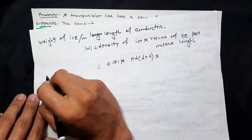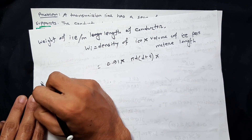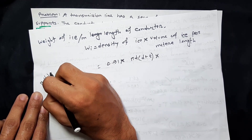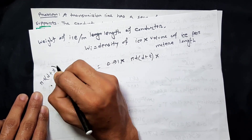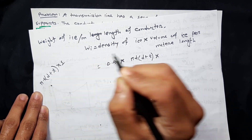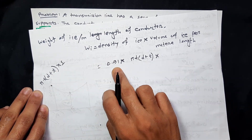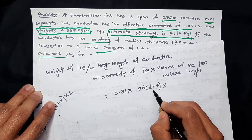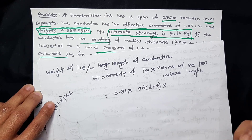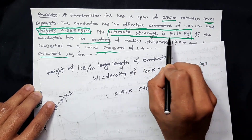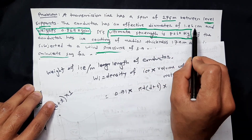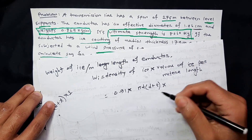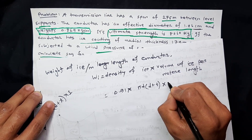Volume of ice per meter length equals π·t·(d+t)·1 meter. We use density in gram per meter. D is the diameter in centimeters, so we use centimeter calculations throughout.